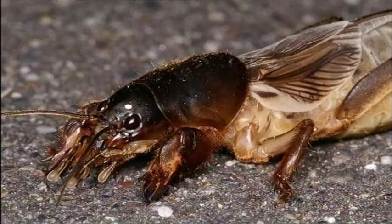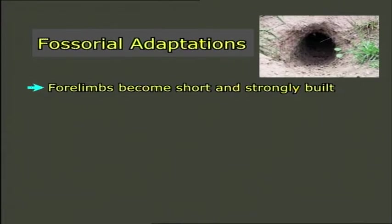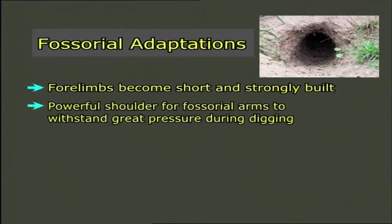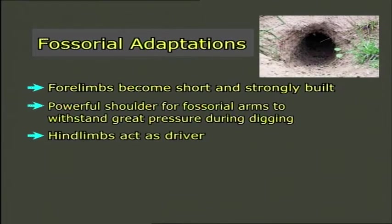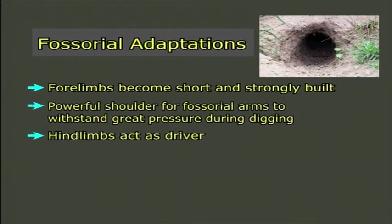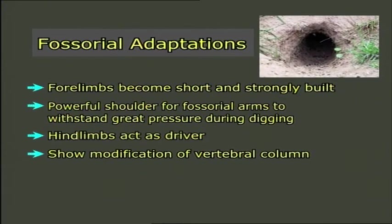Fossorial animals possess snout, teeth, and forelimbs as a very powerful and efficient digging apparatus. Snout and teeth act as important digging machines, as in swine. In the insect Gryllotalpa, the forelimbs are modified for digging; they become not only short and strongly built but also very much broadened. A powerful shoulder is an asset for fossorial animals because it has to withstand great pressure during digging. The hind limbs act as drivers, pushing the animal forward. Fossorial animals also show modification of the vertebral column; several cervical vertebrae become either elongated or fused, which helps in the digging process.